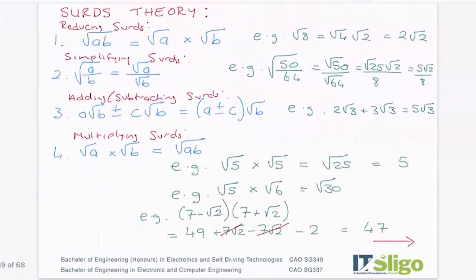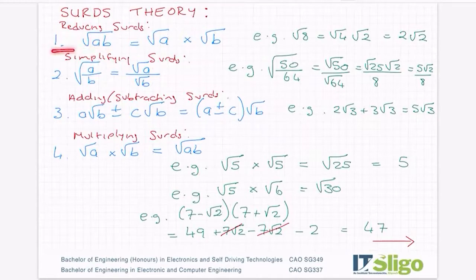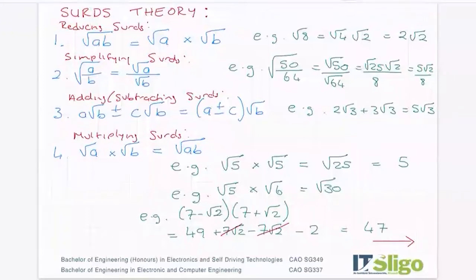What I've written out here is some theory on the background of surds and some properties of surds that are good to know. The first one here is reducing surds. When you get the square root of a product under a square root sign — a surd is, I suppose, a square root number that cannot be simplified anymore. So when you see a square root sign, or when you're asked to leave your answer in surd form, expect a square root to be in the answer.